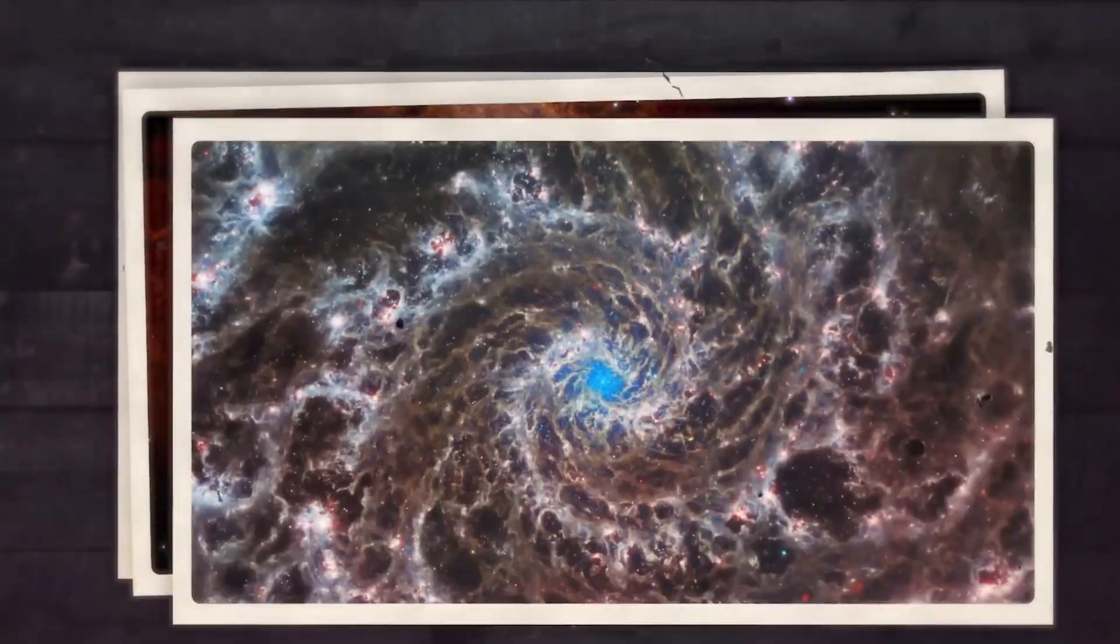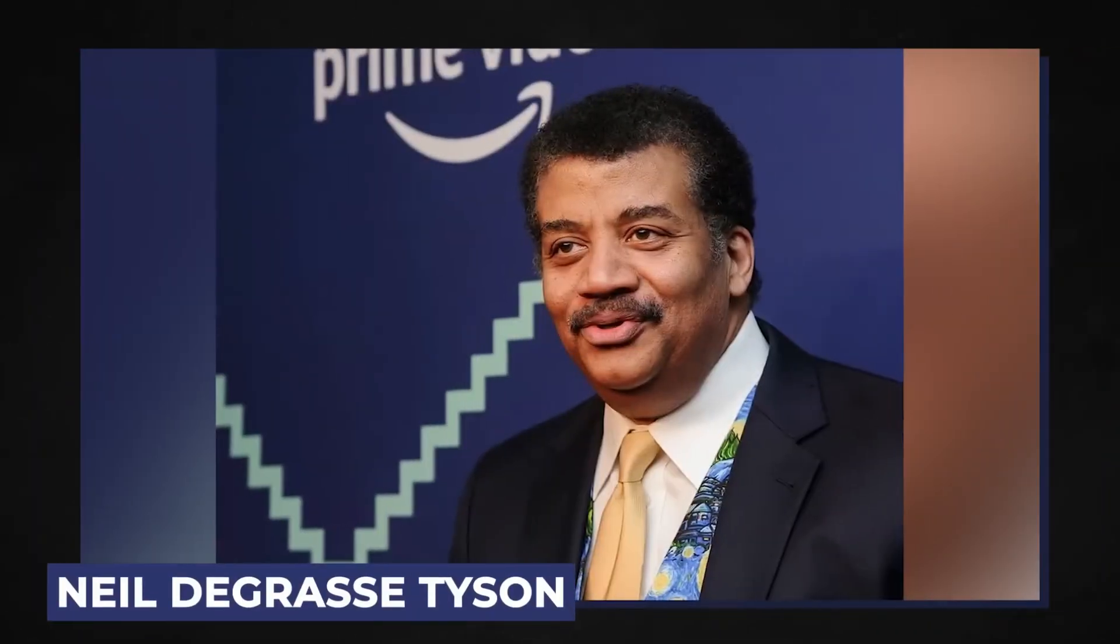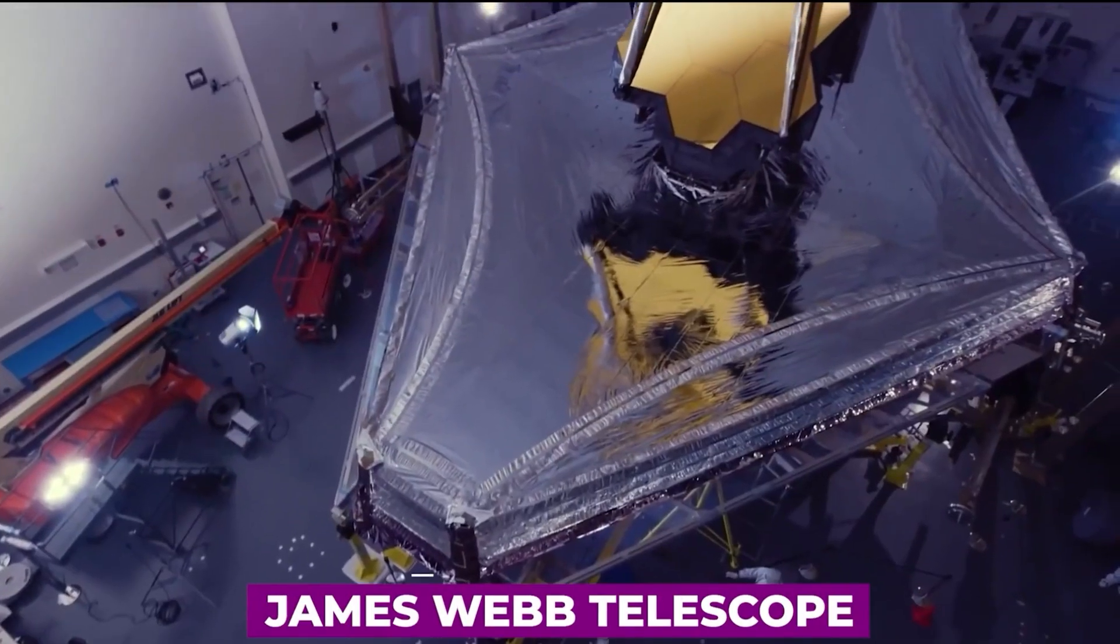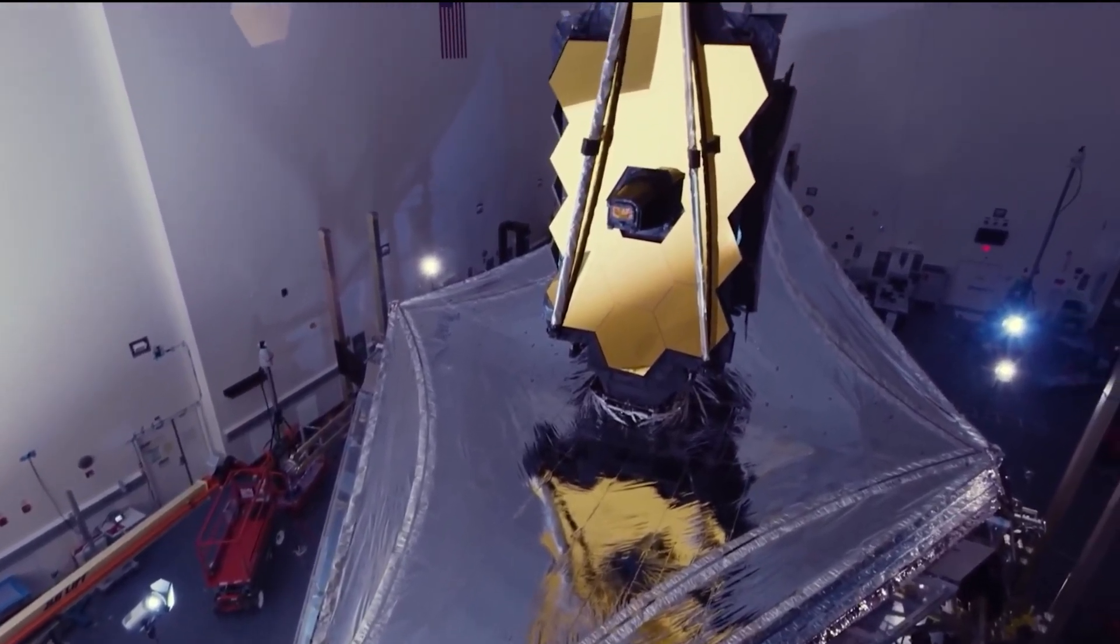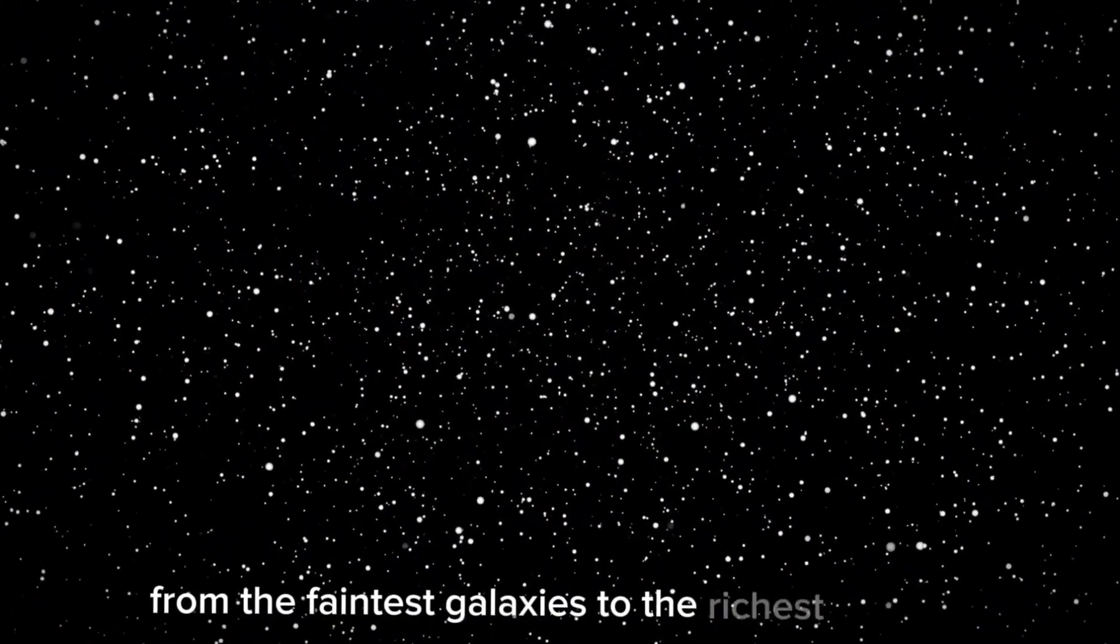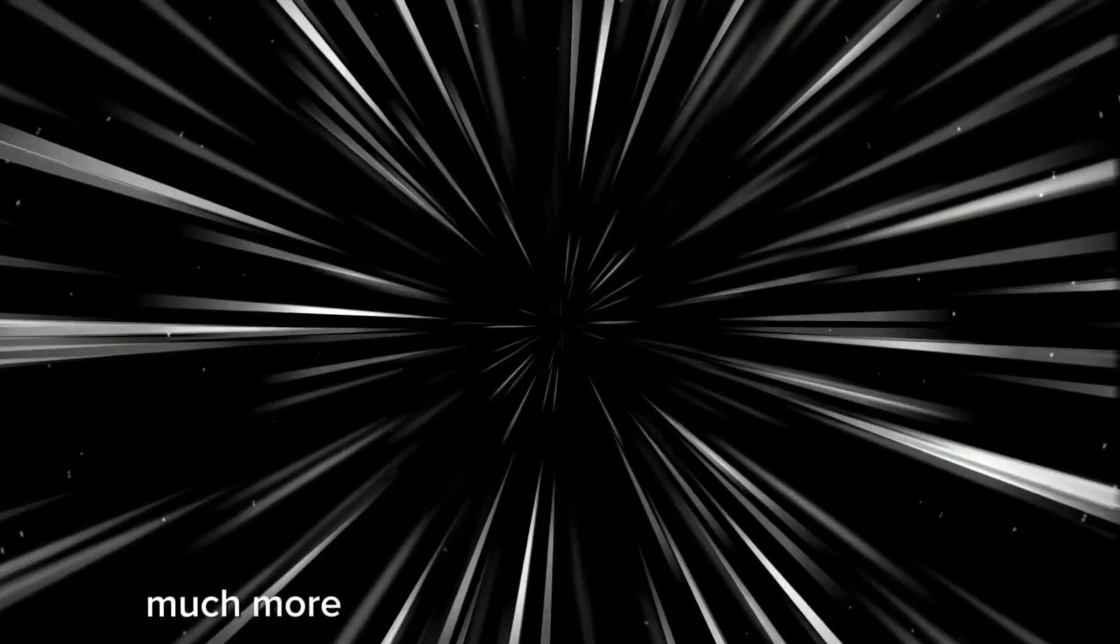First of all, you have to know that James Webb outperformed Hubble by more than we expected. Whereas Hubble has a primary mirror that's 2.4 meters across, Webb's segmented mirror spans 6.5 meters. This leads to a resolution that's 270 percent as sharp for the same wavelength light and light gathering power that's 730 percent as great as Hubble's.